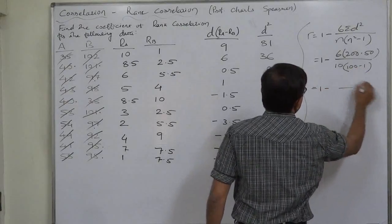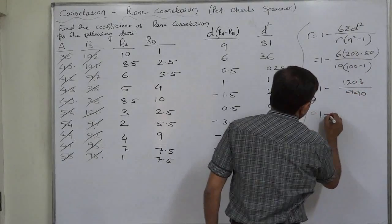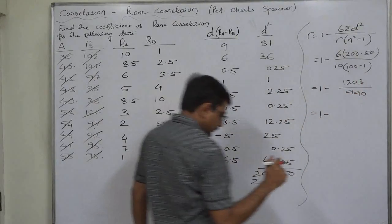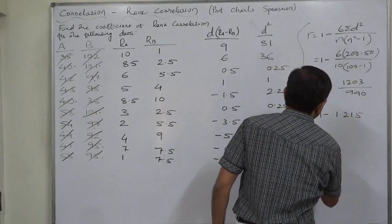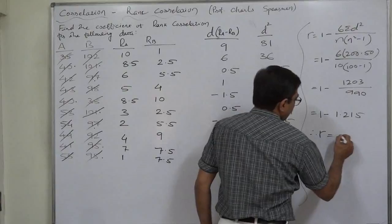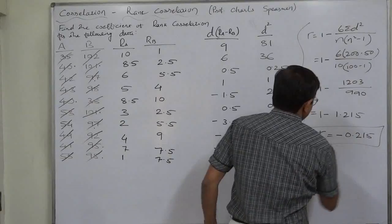So it is 1 minus 1203 divided by 990. So it is 1 minus 1.215. So the coefficient of rank correlation in this particular case comes to minus 0.215.